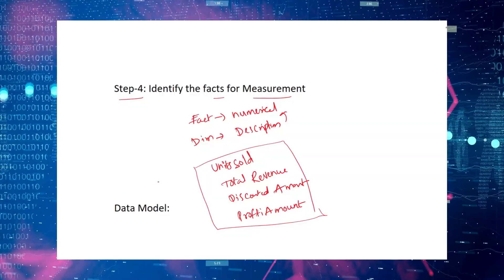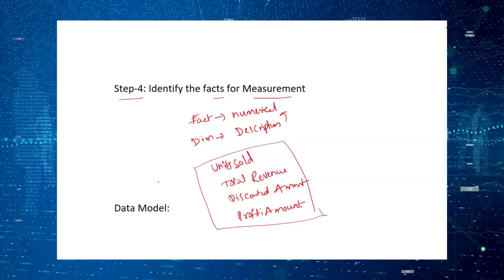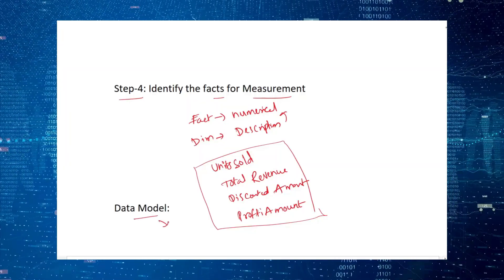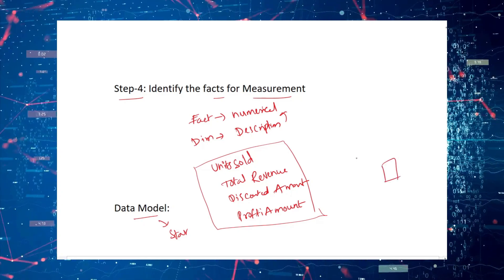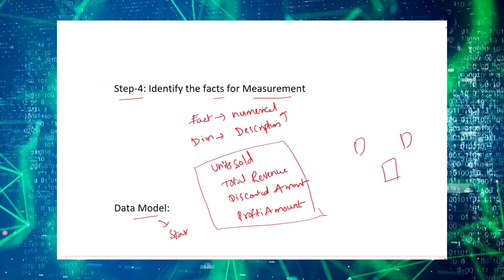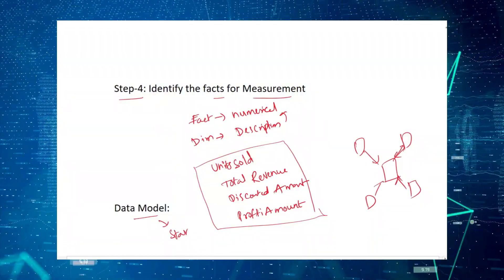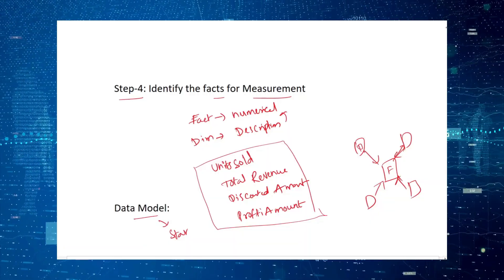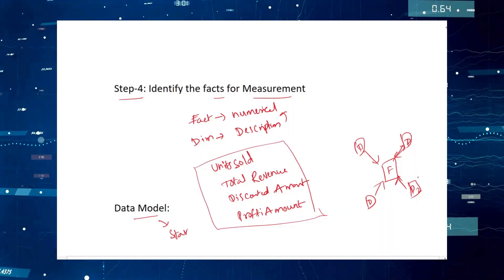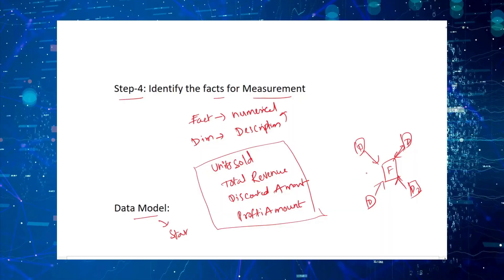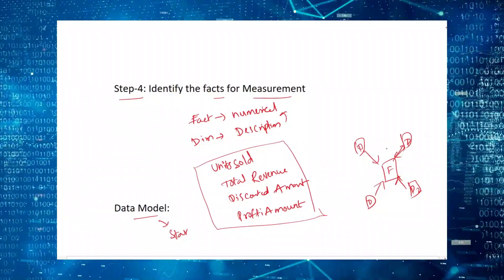Now that we've identified the grain, dimensions, and fact measures, we can create the data model by establishing relationships between the fact table and dimension tables. We start by creating a star schema, where the fact table sits in the center surrounded by dimension tables. If some business questions still can't be answered by the star schema, we can move to a snowflake schema as well.